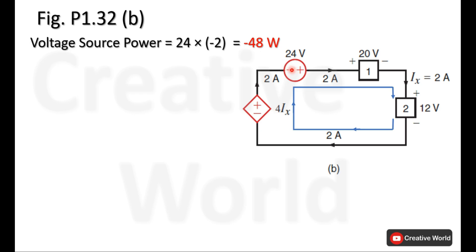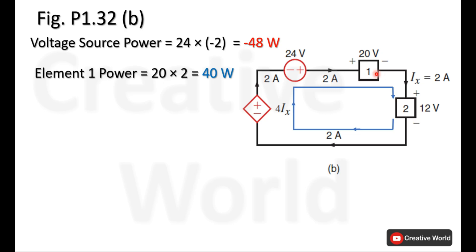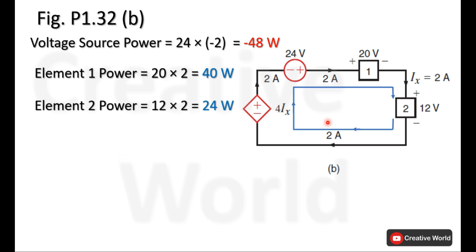Element 1 power will be the voltage across it — 20 volts — multiplied by the current through it — 2 amperes. The current is entering from the positive terminal and leaving from the negative terminal, so this current is taken with a positive sign, giving element 1 a power of 40 watts being absorbed. The power of element 2 will be 12 volts multiplied by 2 amperes; the current enters from the positive terminal, so element 2 is absorbing 24 watts.